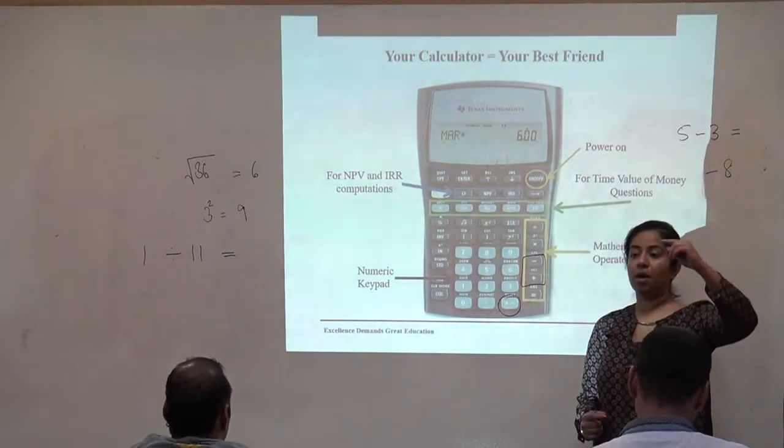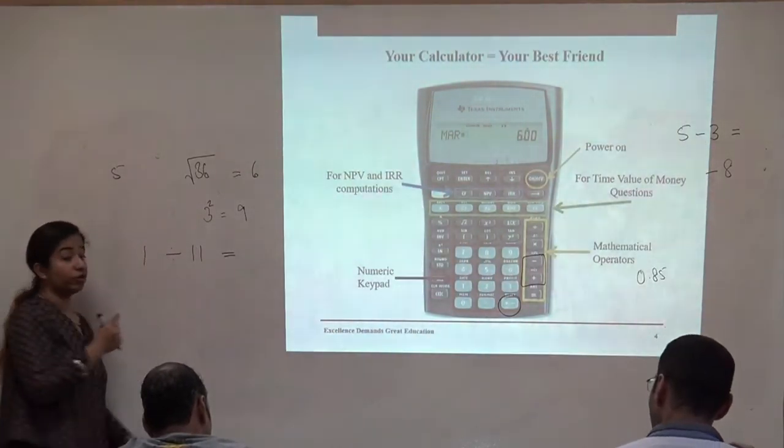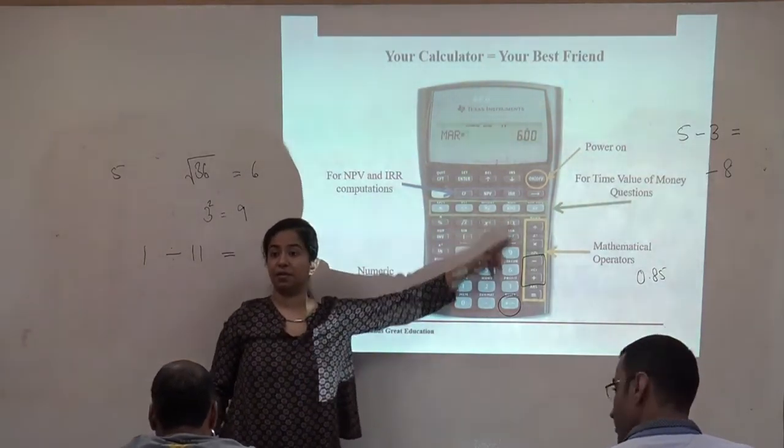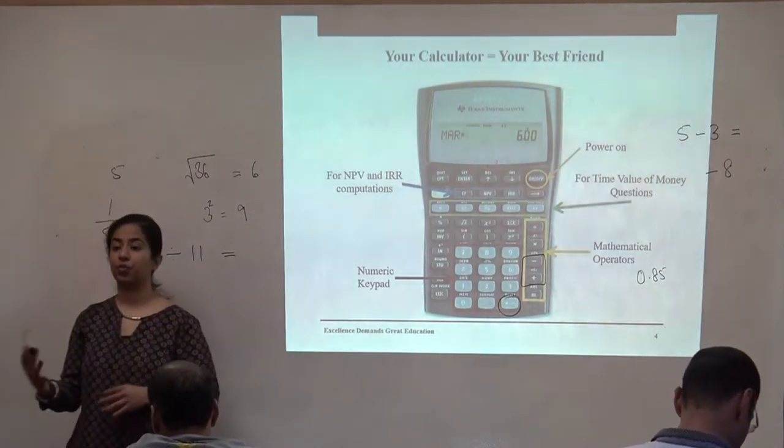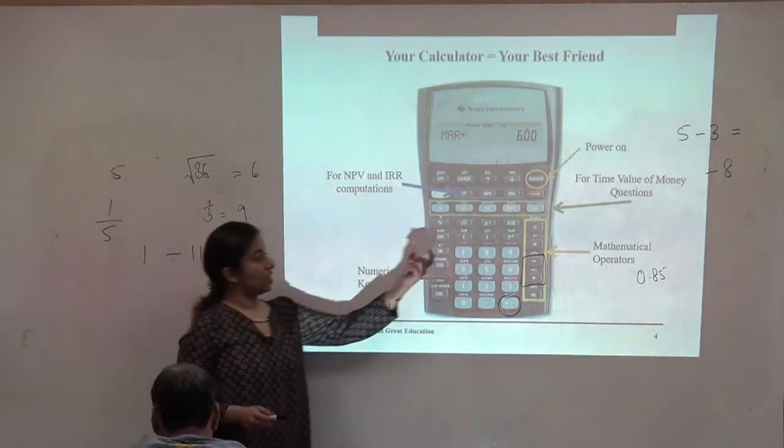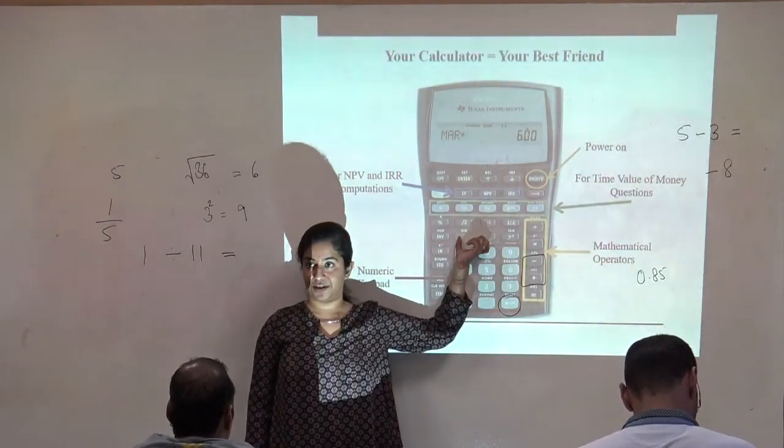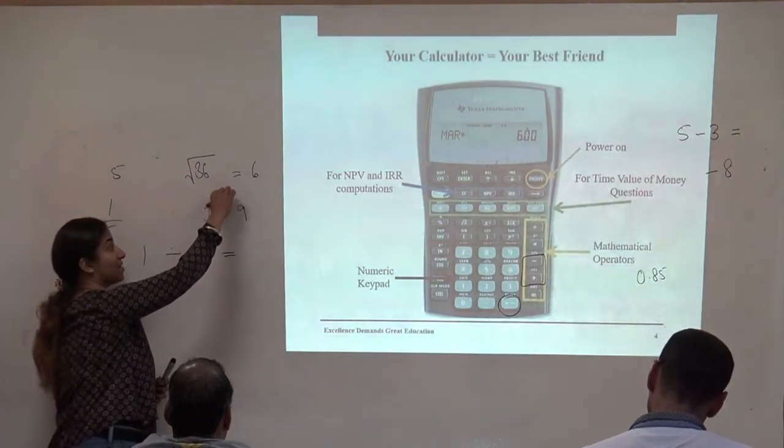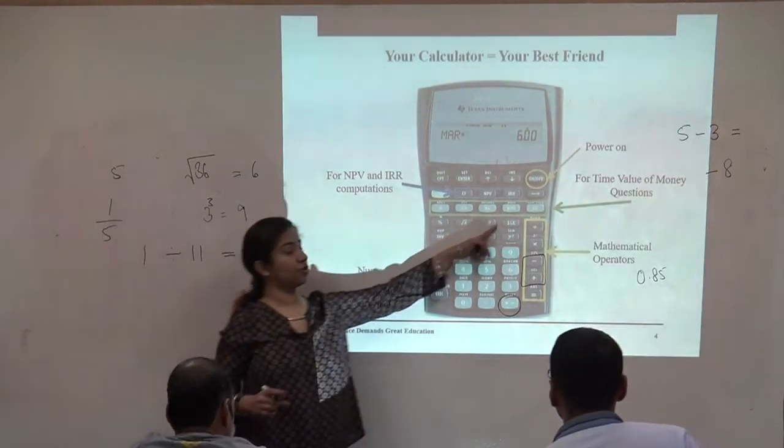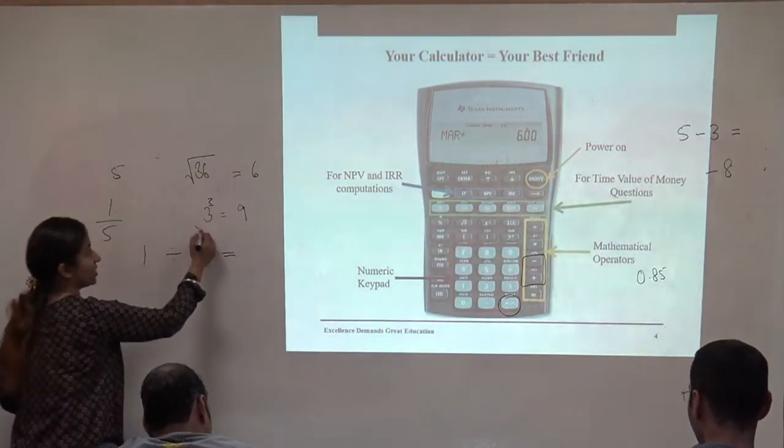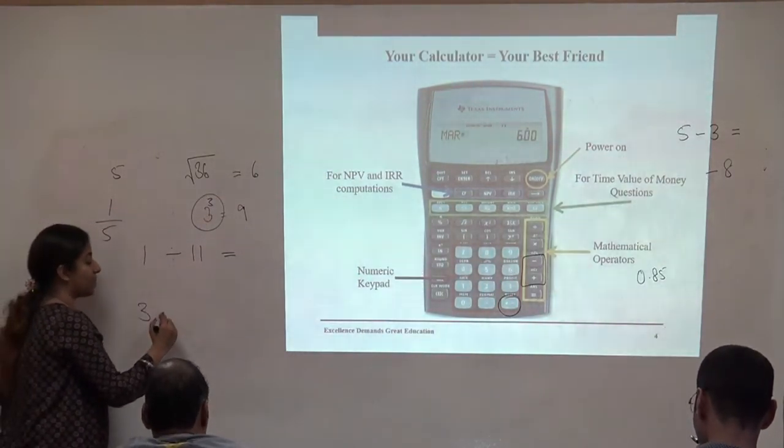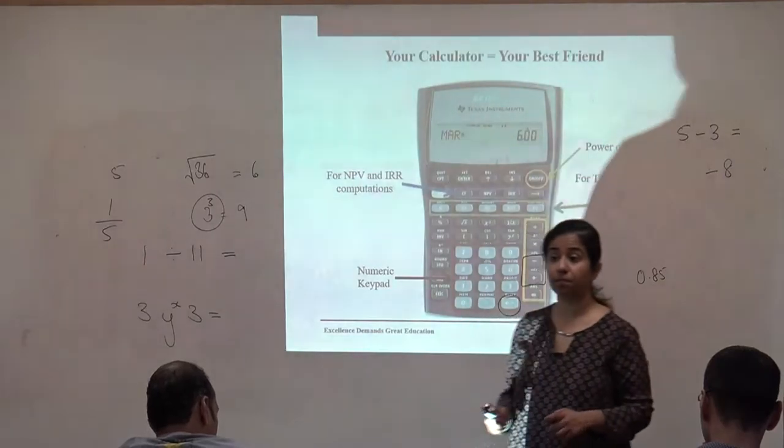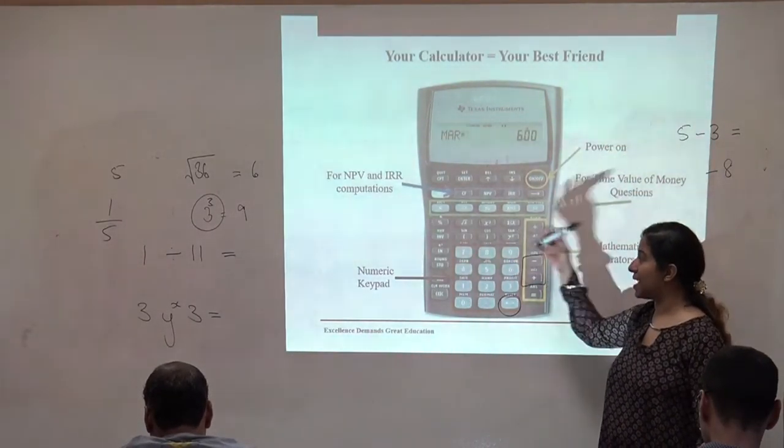If you ever want to do square root, you're doing 36 square root. Your square root button is here. So you type 36 first, then press square root. You should get equal to 6. If you ever want to do square, which is 3 to the power of 2, just hit the square button, 3 and then square button and you will get 9. 1 over x stands for reciprocal. Basically, if you have a number 5 and you want to do it as a fraction, 1 divided by 5, type 5, press the 1 over x button, it will become 1 over 5. Then it becomes 0.2.